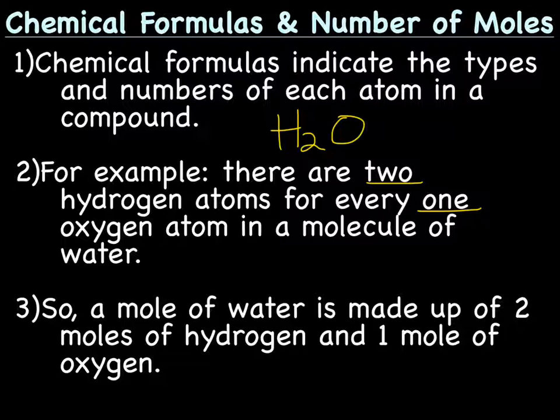So a mole of water is made up of two moles of hydrogen and one mole of oxygen. Let's think about that for a minute. If I had one atom of water, I would have two hydrogens and one oxygen. What if instead I had two molecules of water? I would then have four hydrogens and two oxygens. And if I had ten molecules of water,